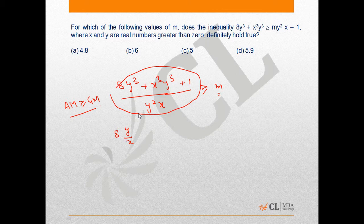So this equation will turn out to be 8y/x plus x²y plus 1/(y²x) is always greater than or equal to the term. These are the terms.